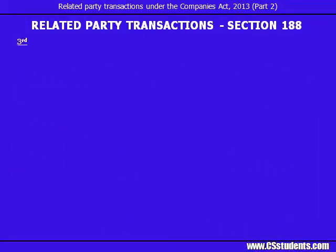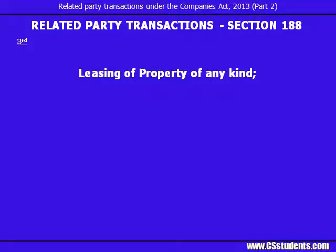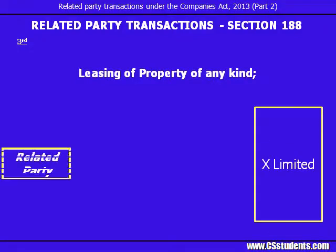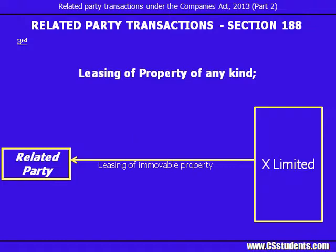The third point is leasing of property of any kind. So as discussed earlier, leasing of properties is also covered. In our example, either X Limited is proposing to give the lease of any of its property to any related party, or the related party is offering the lease to X Limited. Both transactions need to comply with the consent of the Board and, if required, by special resolution.